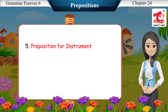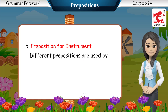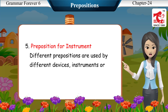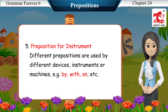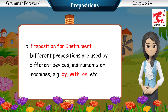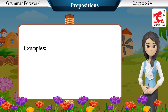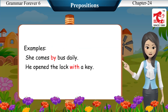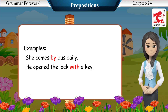Prepositions for instrument: different prepositions are used for different devices, instruments, or machines, e.g., by, with, on, etc. Examples: She comes by bus daily. He opened the lock with a key.